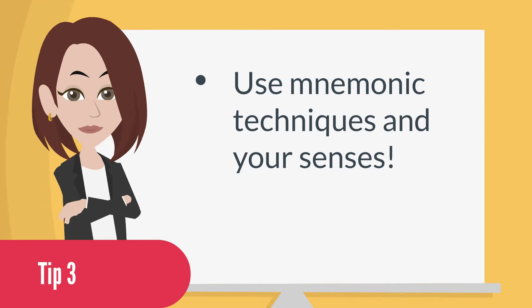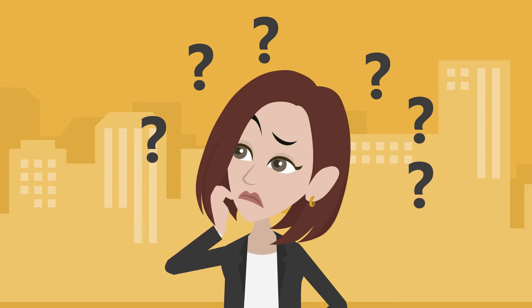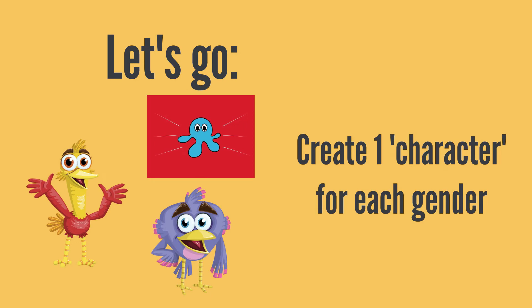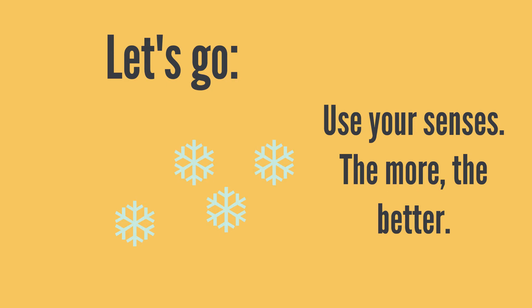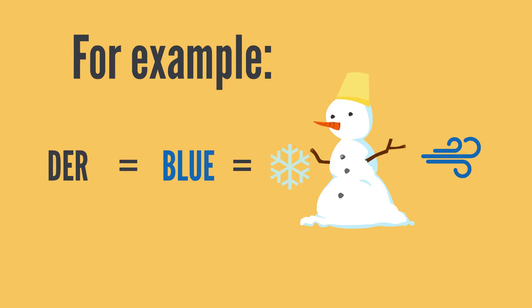Also try mnemonic techniques and use your senses. For example, create one character for each gender — imagine something funny, like those here, or something that makes sense. Usually the funnier and stranger, the better, because your brain focuses on that. Use your senses, and the more the better. For example, if you decide that 'der' is blue, and blue reminds you of cold, then when you're learning something masculine like 'der Wagen', you visualize the car covered in snow and feel the wind — the more vivid, the better.